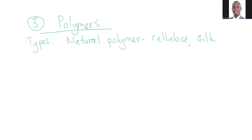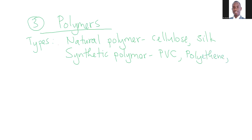Then we have the synthetic polymers. Synthetic polymers include polymers like PVC — polyvinyl chloride — we have polyethene, we also have things like Terylene, and we also have others like PTFE. PTFE stands for polytetrafluoroethene — that is the non-stick frying pan that you can use for frying without sticking.